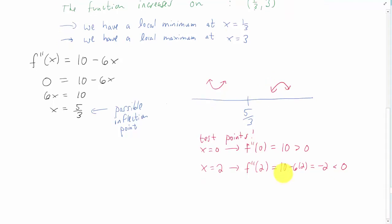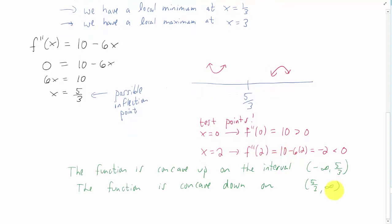Let's summarize. We just found that the function is concave up on the interval negative infinity to five thirds, and that the function is concave down everywhere else from five thirds to infinity. That tells us that our possible inflection point is in fact an inflection point, because the concavity changes.